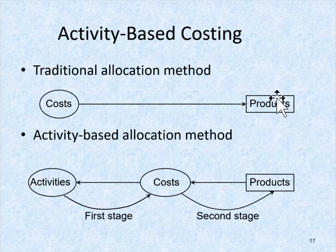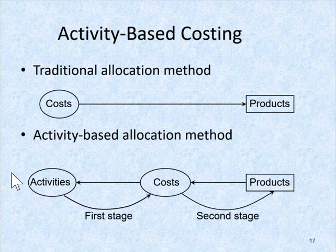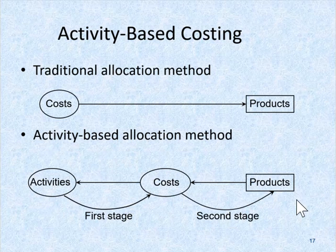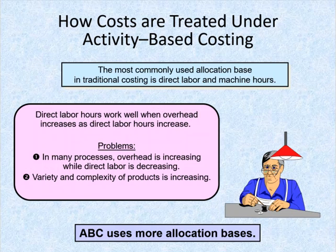With activity-based costing, we start with activities that drive the costs, and then those costs get allocated via activity to the products. The most common allocation bases in traditional cost systems are going to be direct labor hours and machine hours.